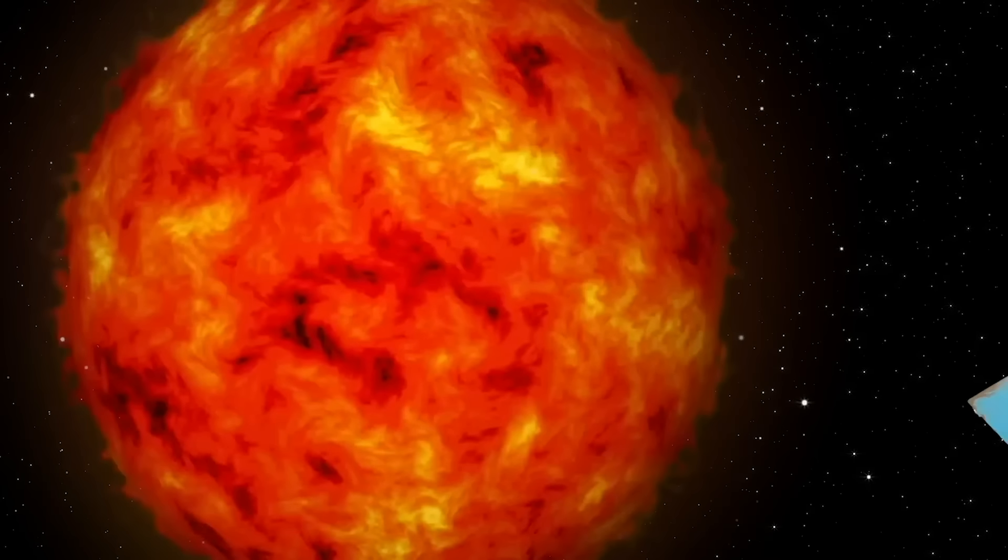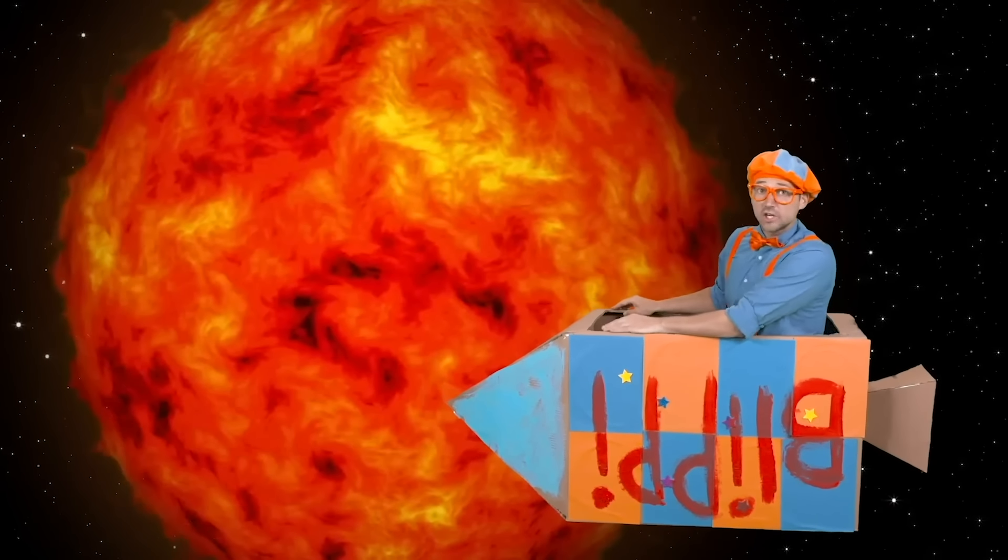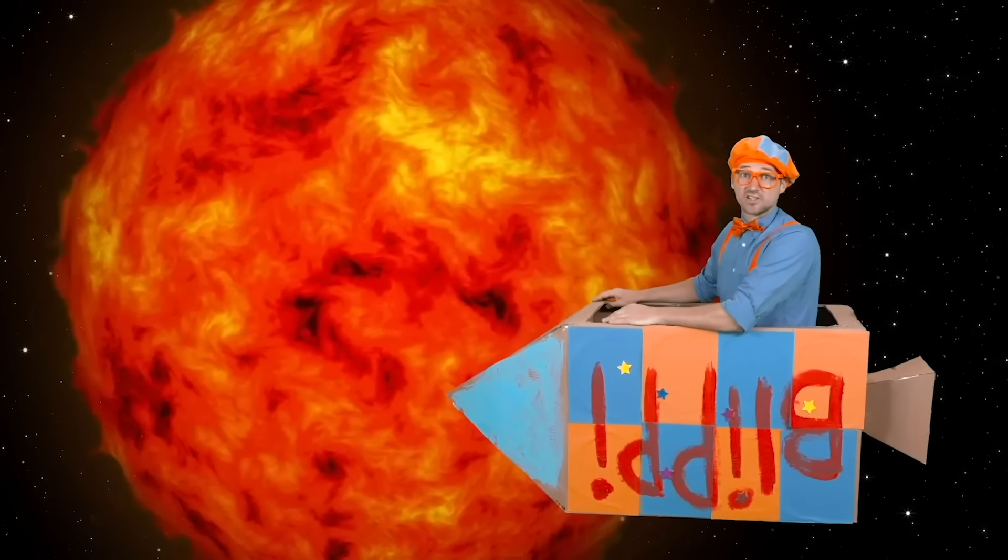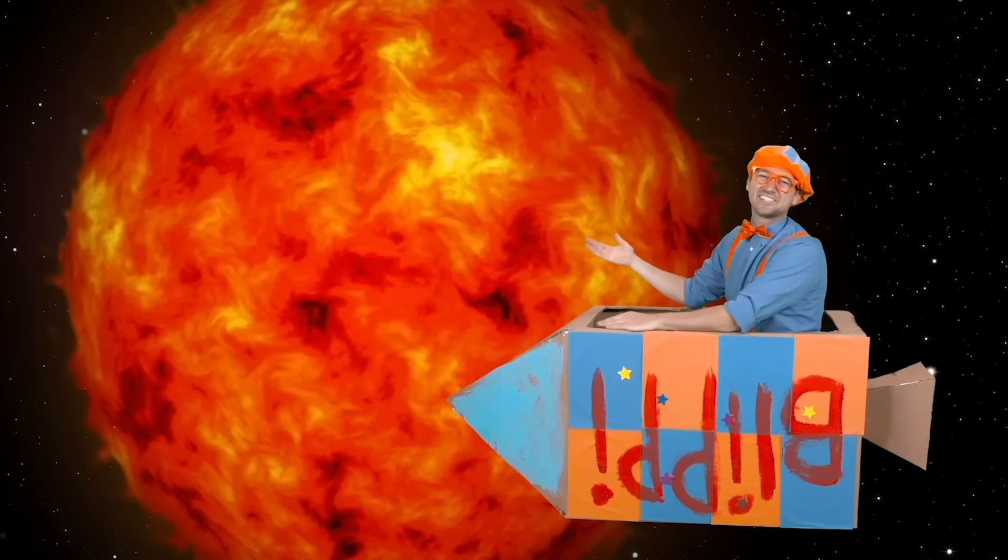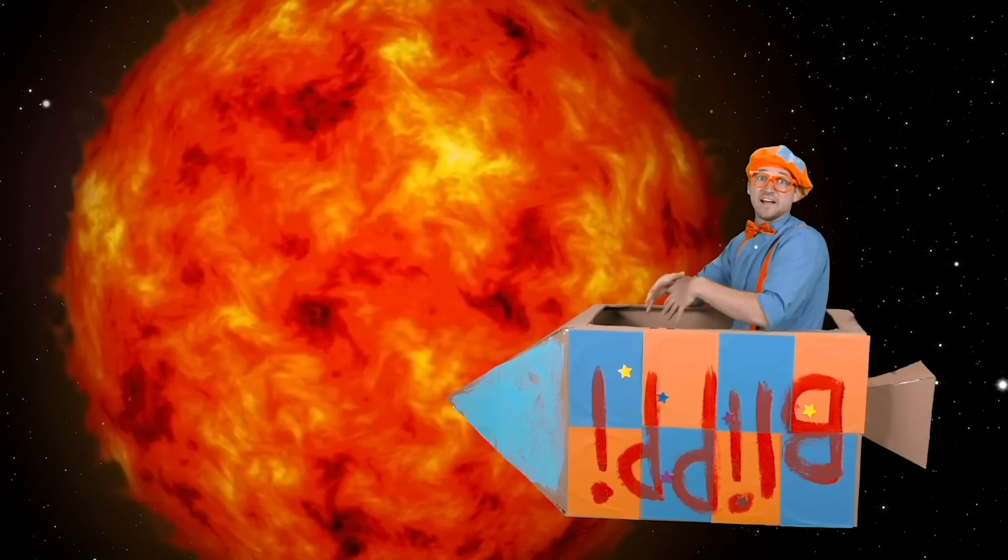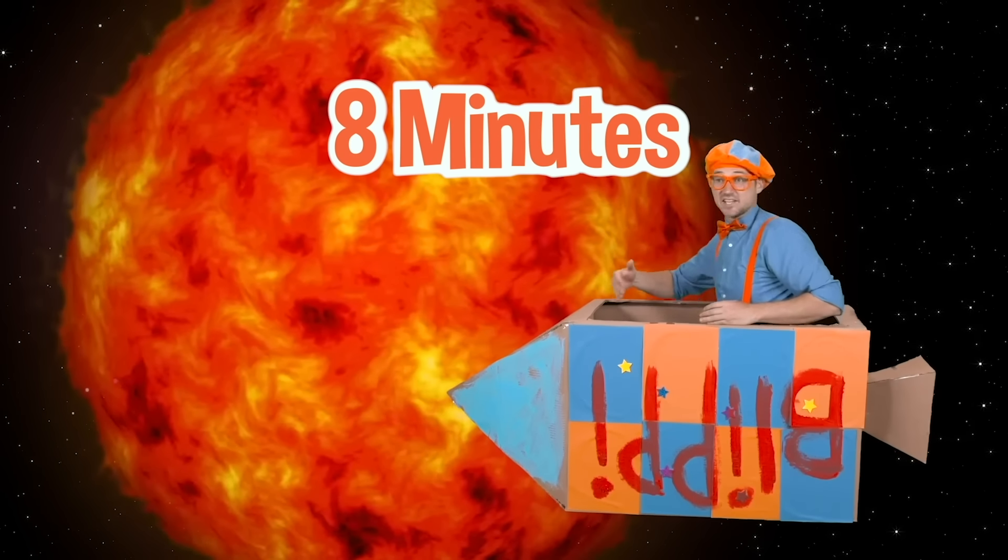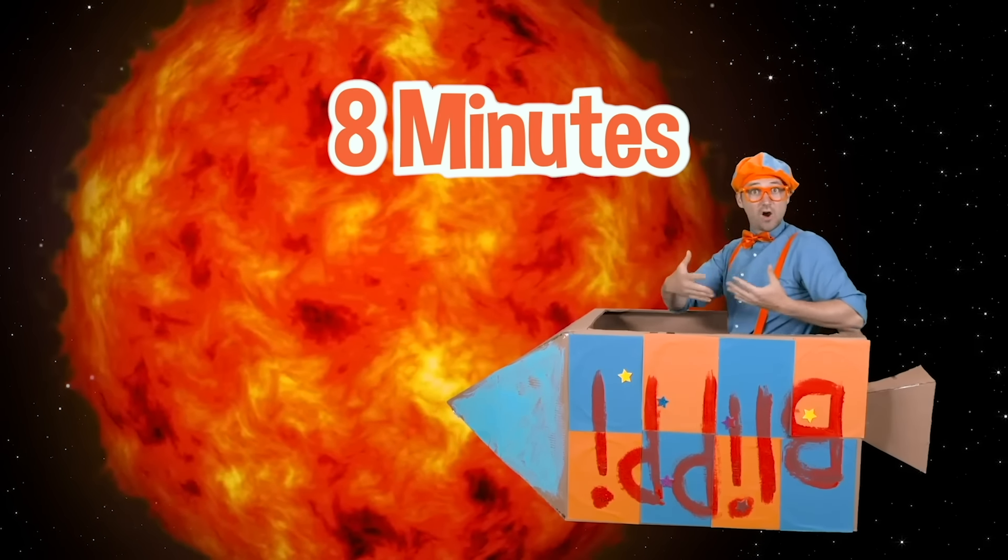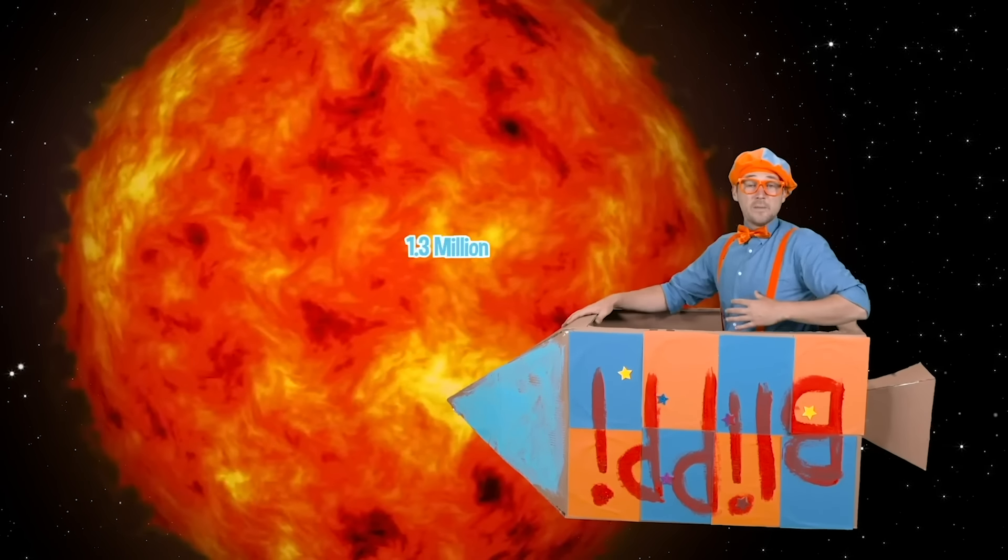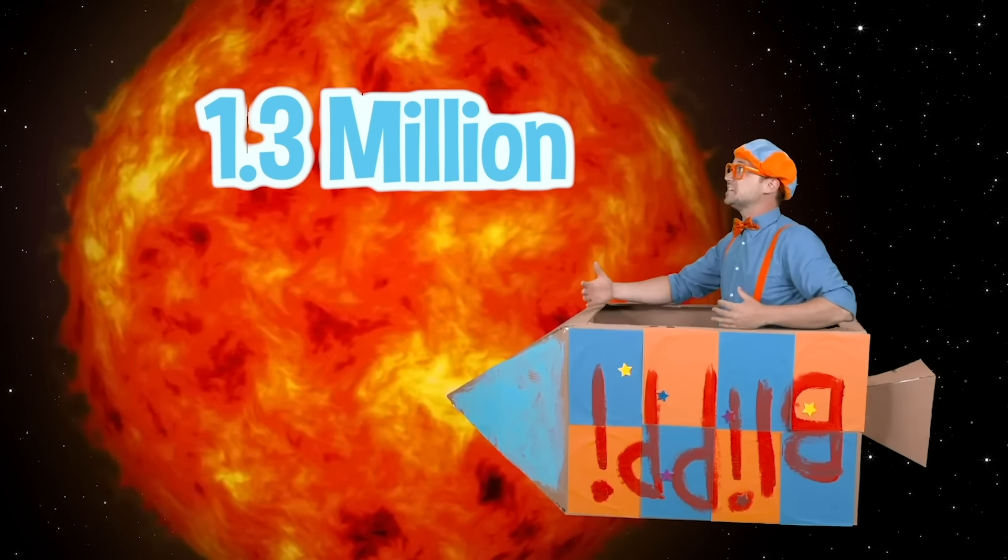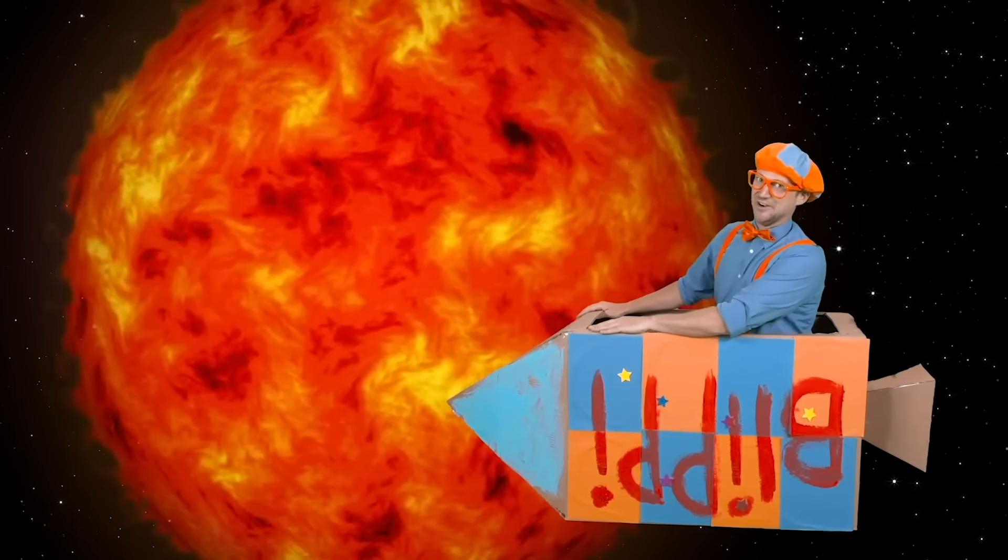Whoa! Look at that! That is our sun. And its name is called the sun. Our sun provides all the light in our solar system. And that light takes eight minutes to go from the sun to our planet Earth. And the sun is so big, there's 1.3 million Earths that can fit inside of it. Whoa! That's a lot of Earths.